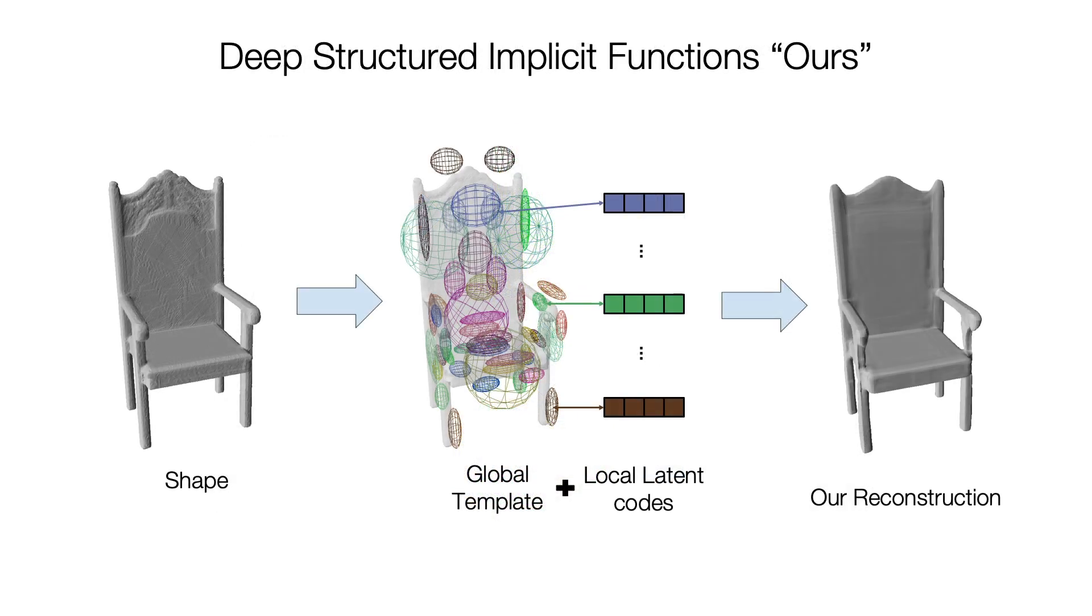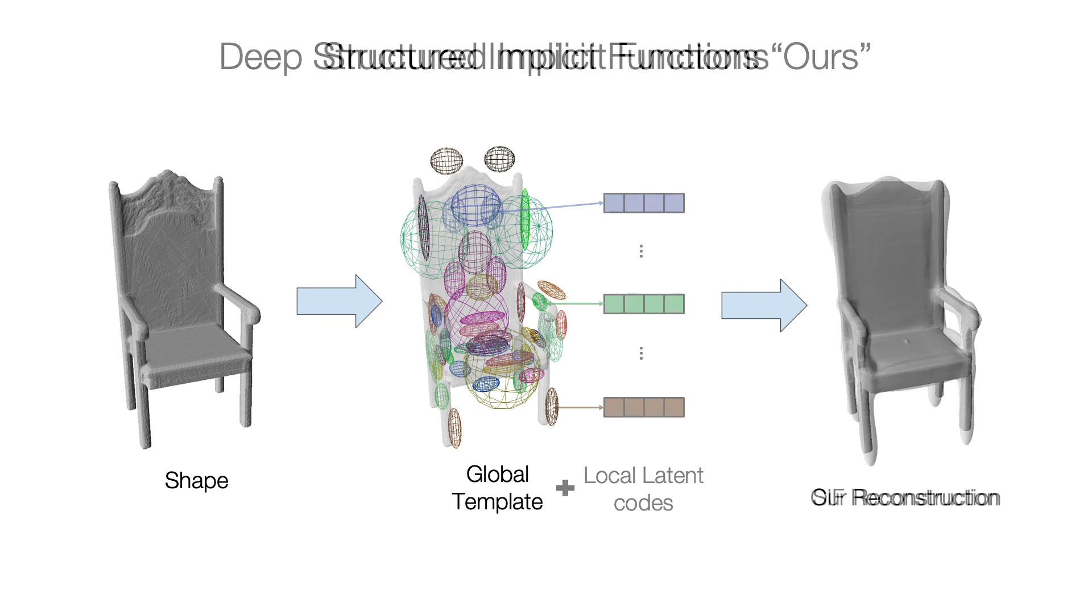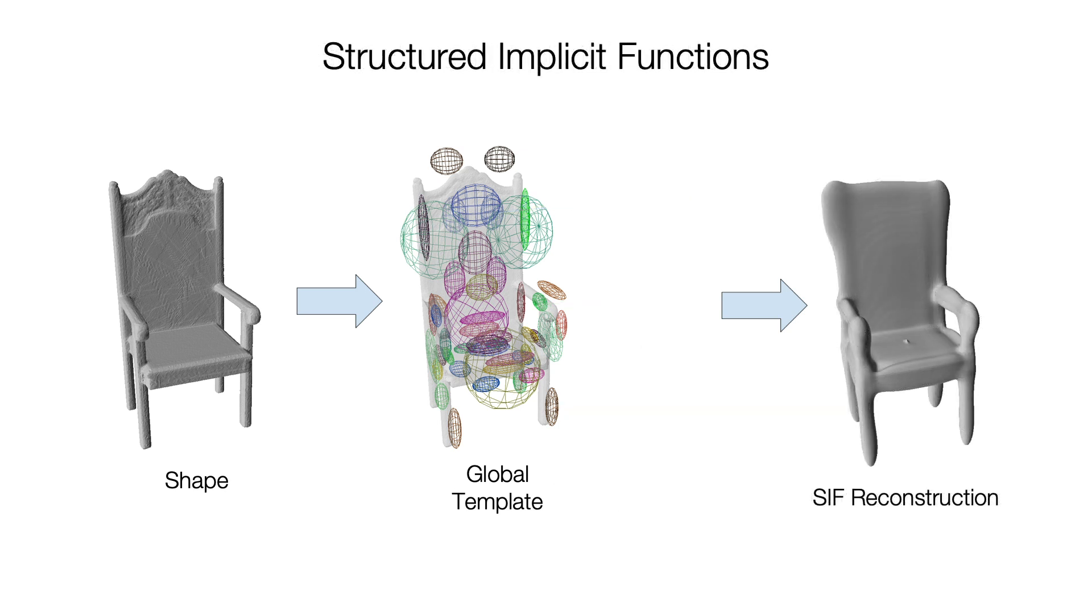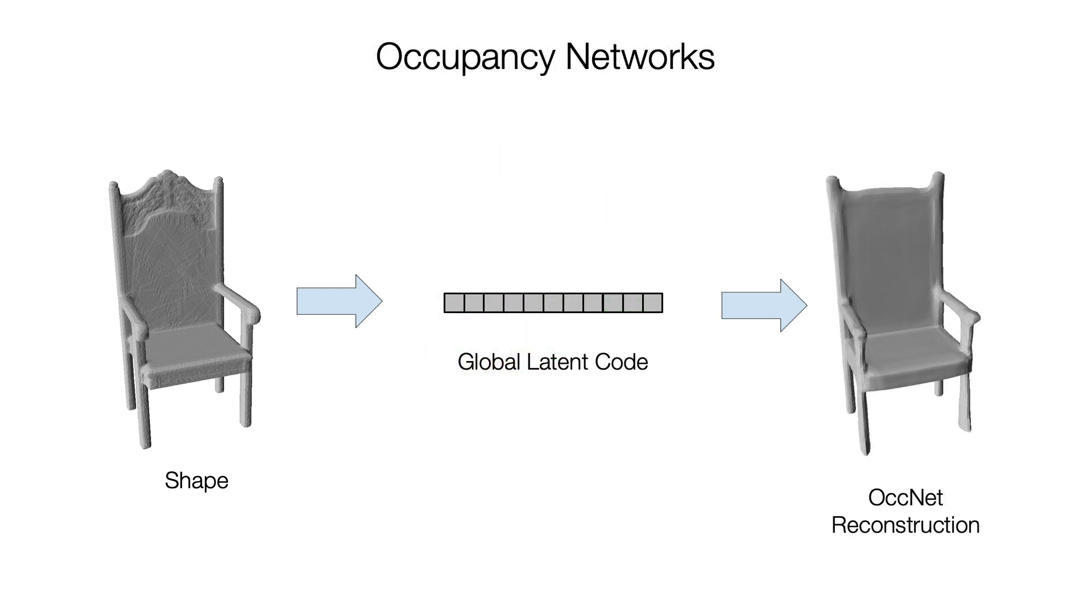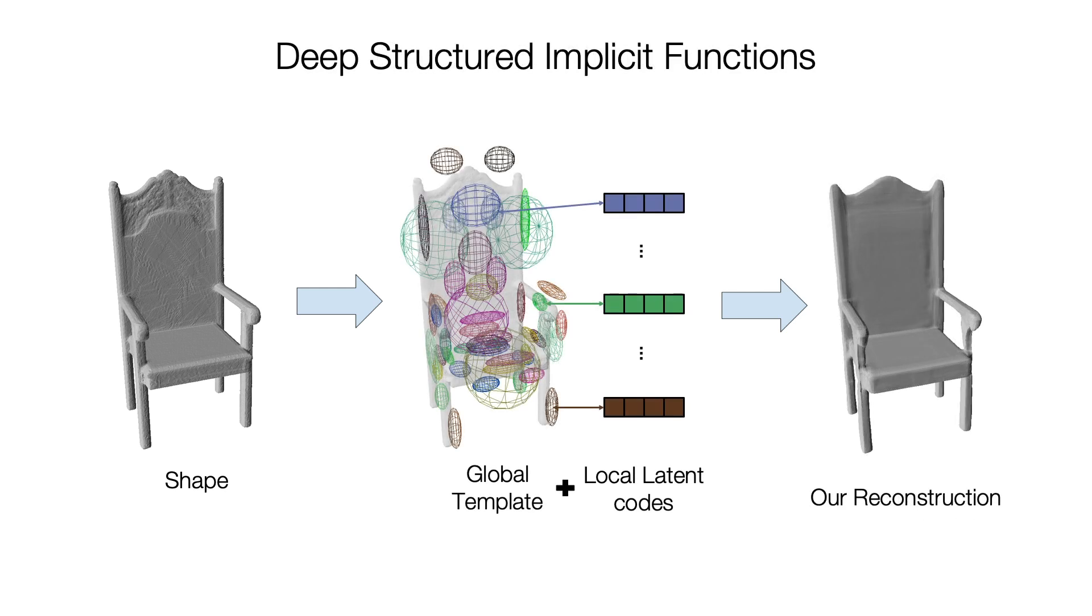Our key idea is to infer deep structured implicit functions, a new 3D representation that represents shape as a structured composition of local deep implicit functions. DSIF is similar to SIF because it decomposes shape into local regions, but it also attaches a latent vector to each region. DSIF is similar to a deep implicit function because it decodes latents to a function over space, but distinct in that the function is local and must only represent fine details.